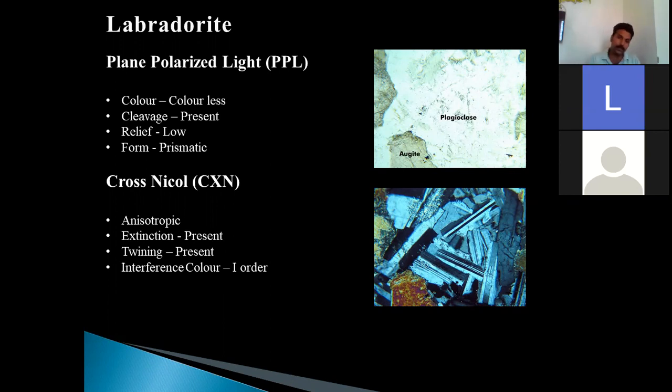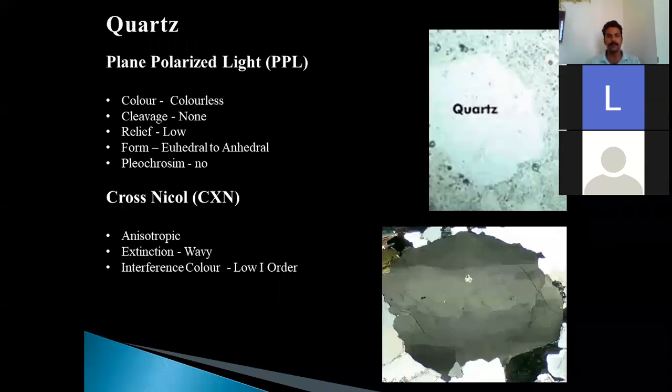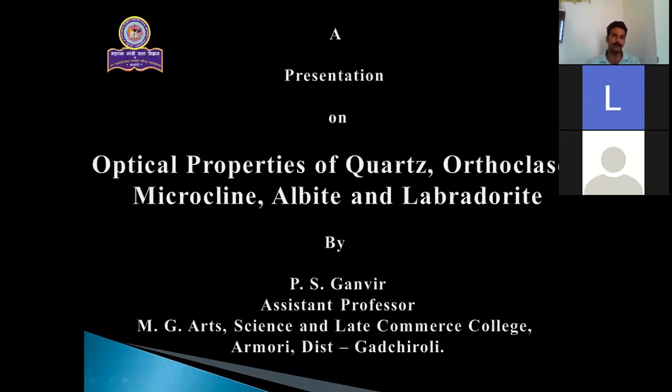In cross-nicol orientation, the mineral grain is anisotropic. Extinction is of course present. It is quite visible in the given microphotograph. The twinning is present and the first order low interference colors is shown by labradorite. So this was all about the optical properties of some selected minerals. Let us revise them.